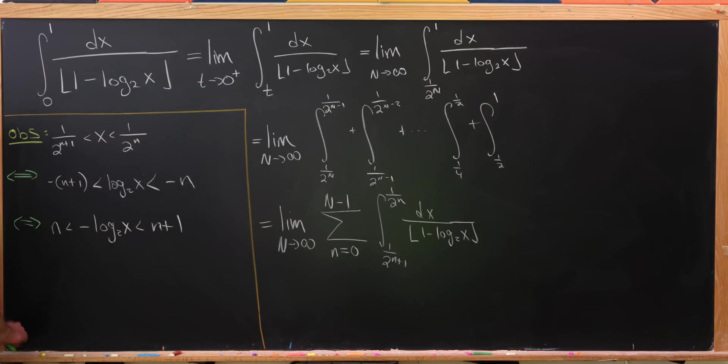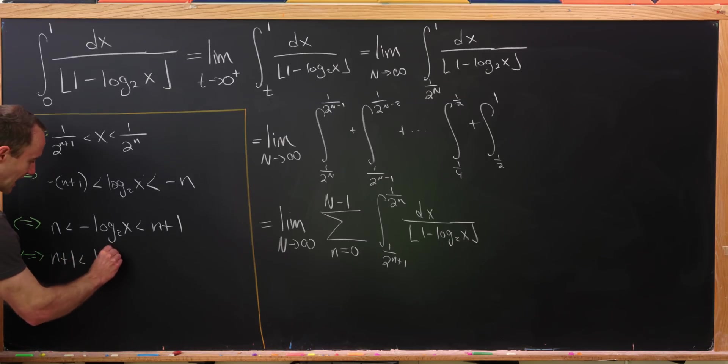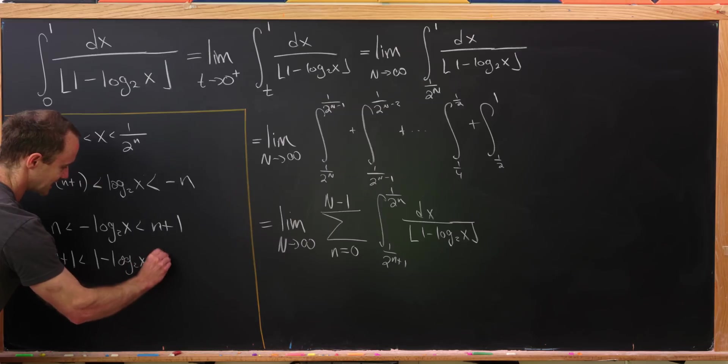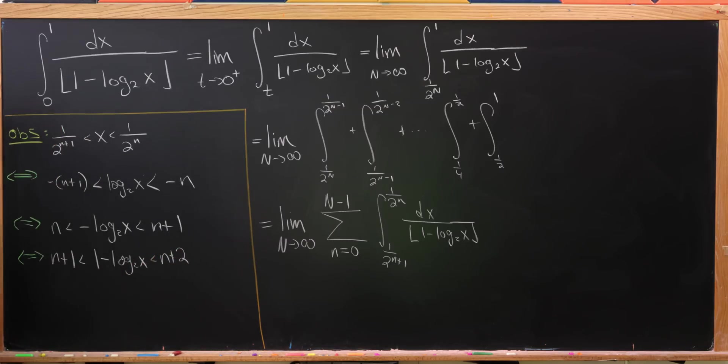And then we'll add 1 to everything here, and we'll have n plus 1 is less than 1 minus log base 2 of x, which is less than n plus 2. But notice that puts 1 minus log base 2 of x between two consecutive integers. So if it's between two consecutive integers and we take its floor, we get the smaller integer.